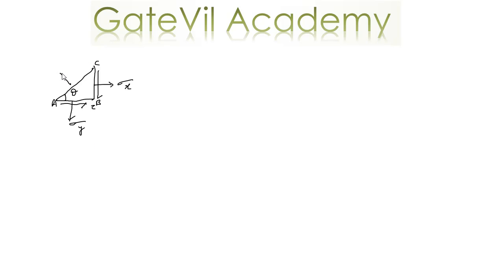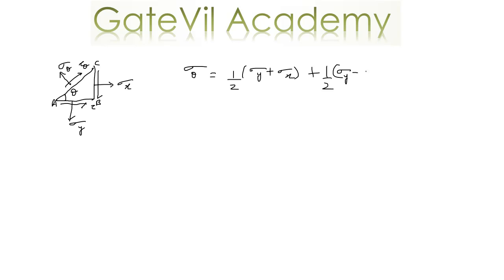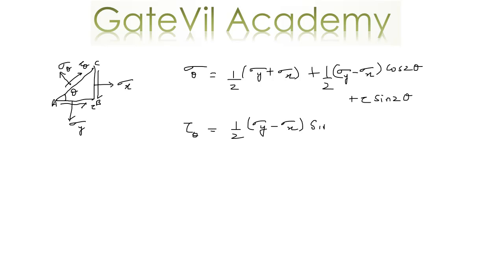Those stresses were sigma theta and tau theta. We derived the expressions for sigma theta and tau theta. Sigma theta was equal to half of (sigma y + sigma x) plus half of (sigma y − sigma x) cos 2θ plus tau sin 2θ. And the expression for tau theta was half of (sigma y − sigma x) sin 2θ minus tau cos 2θ.